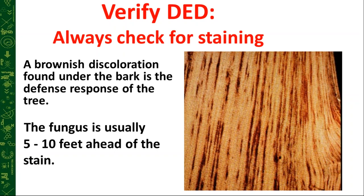If the infection is in the main stem, you can take a hatchet and cut a small window about two to three inches square, tapping with the back of the hatchet to help release the bark. In a progressed case, you'll see staining right in the main stem of the tree.